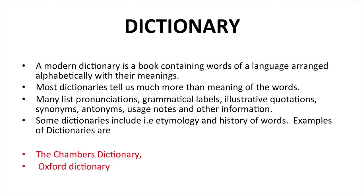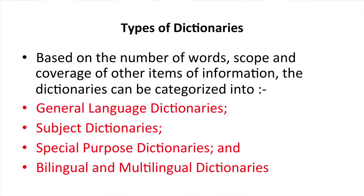Examples of dictionaries are the Chambers Dictionary, Oxford Dictionary, etc. Based on the number of words, scope, and coverage of other items of information, dictionaries can be categorized into general language dictionaries, subject dictionaries, special purpose dictionaries, and bilingual and multilingual dictionaries.